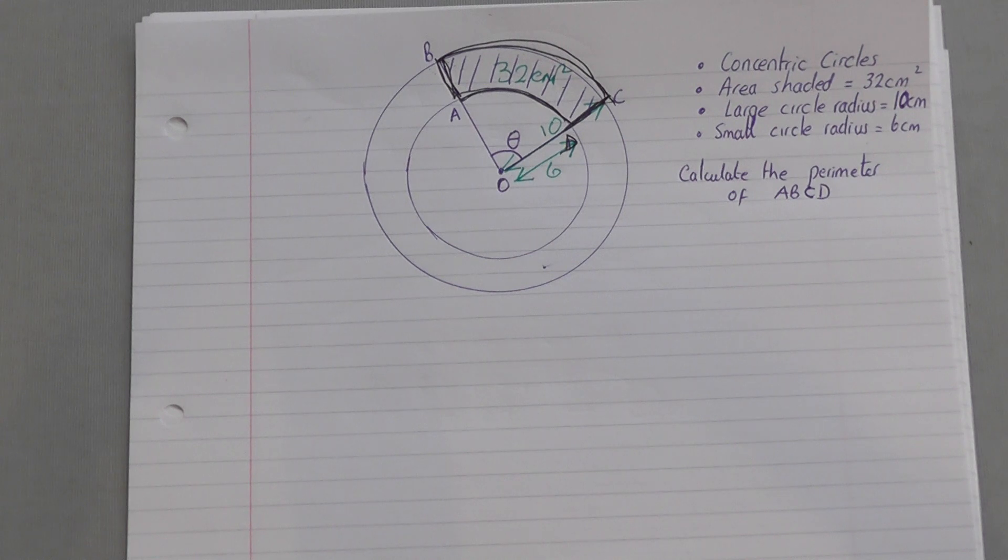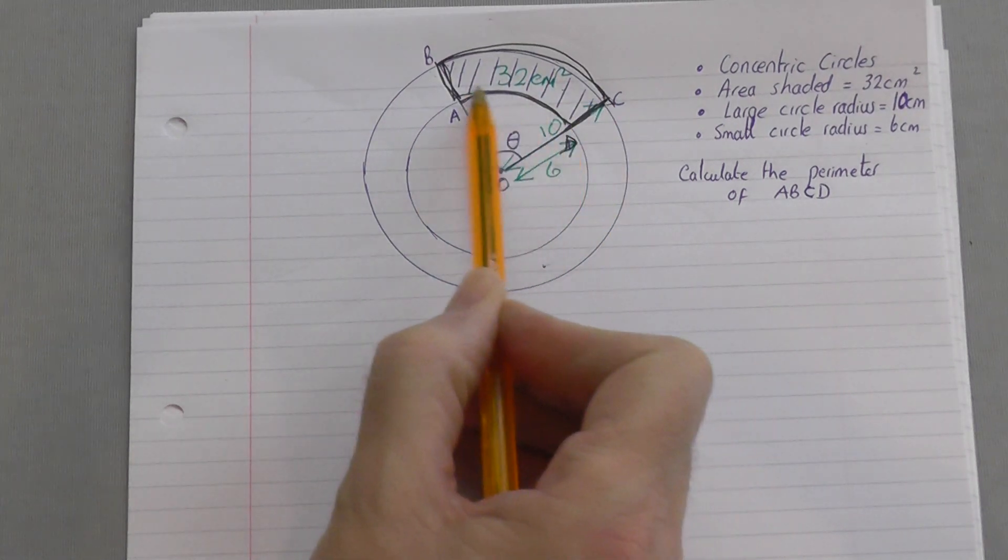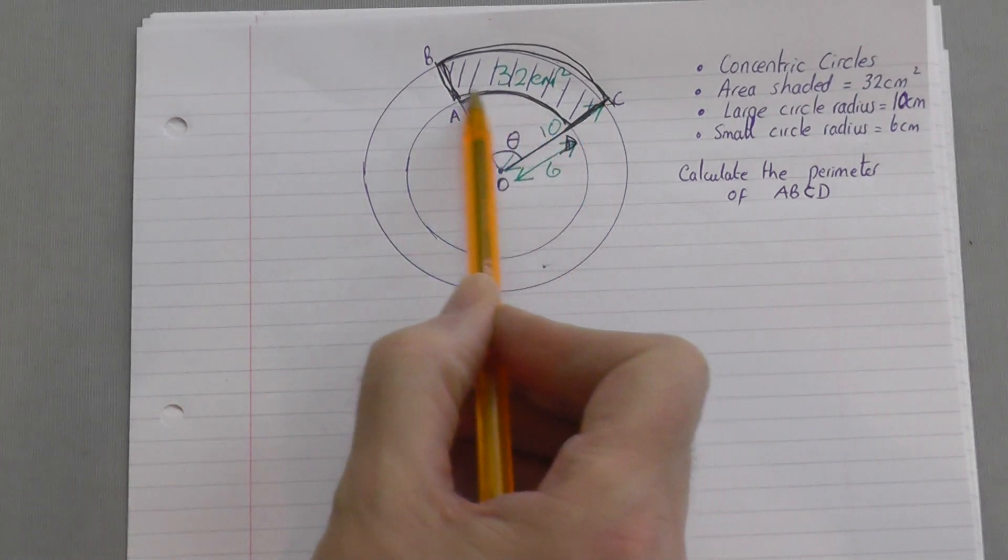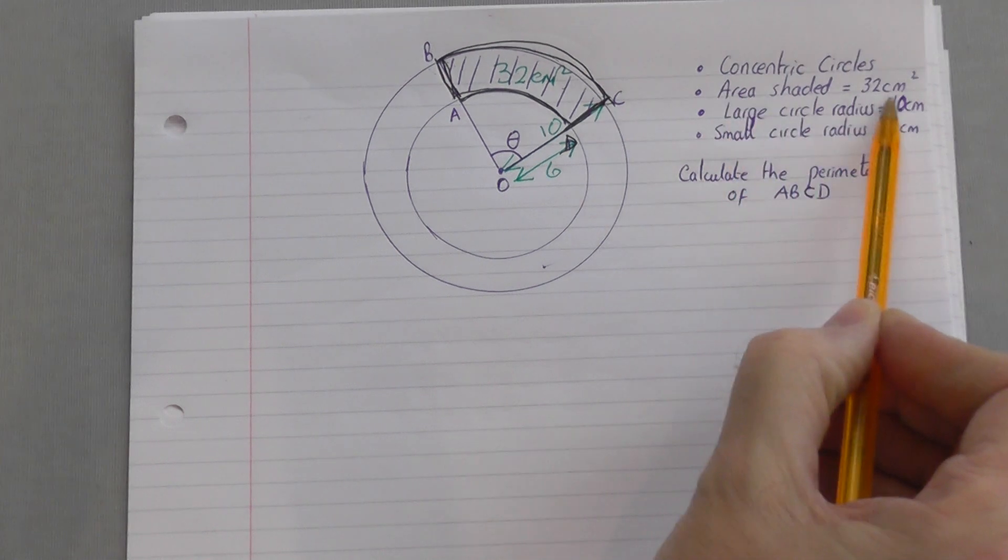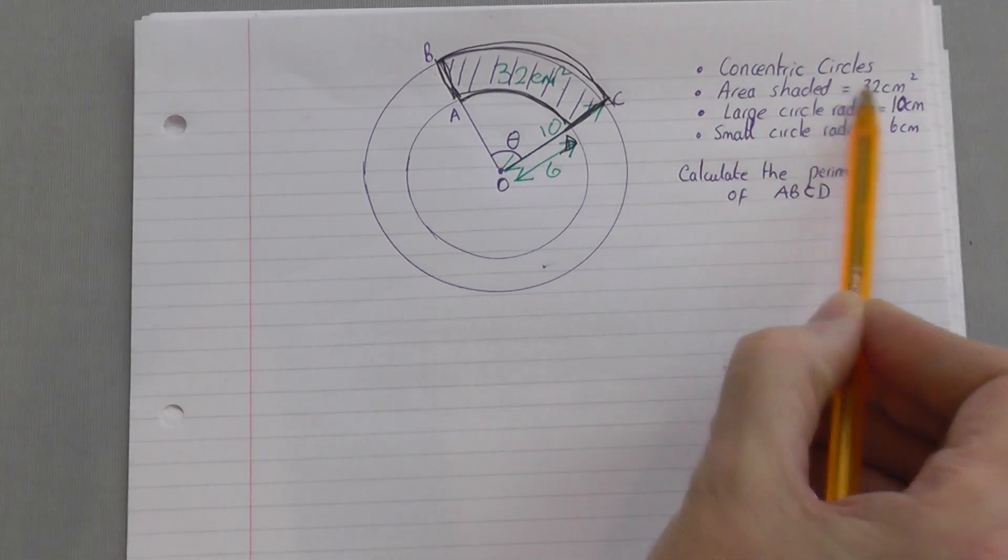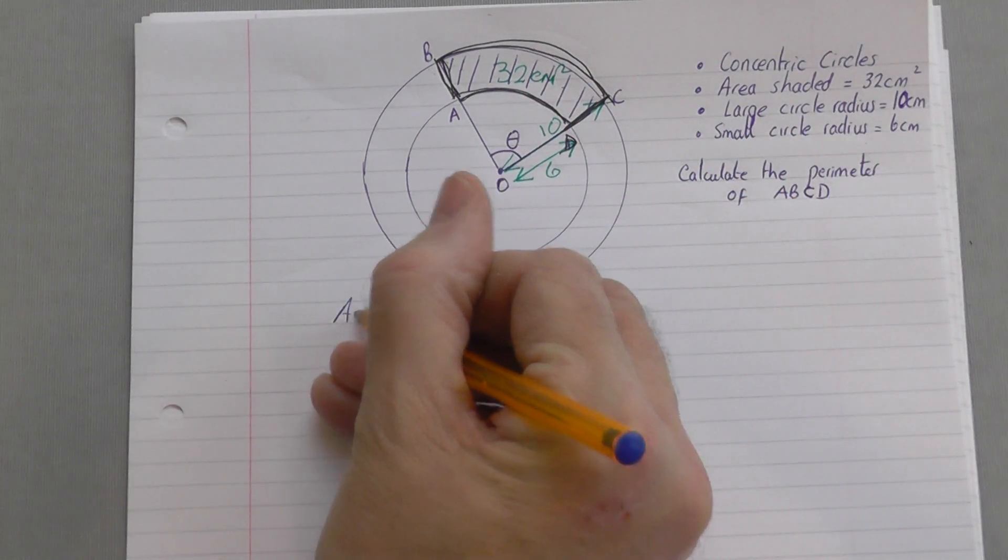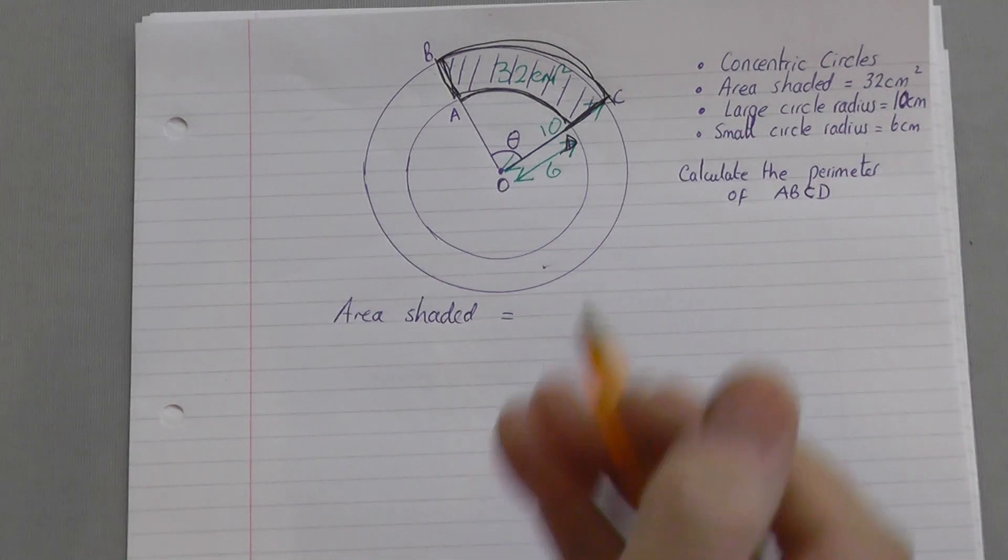To work out perimeter, you need to work out the four different distances for this particular shape. So you'd have that distance, that distance, that distance, and that distance. Now before we do that, you're going to have to make use of that figure there. So I'm going to consider that figure first. The area shaded, and you're going to work out from scratch what the area shaded is.